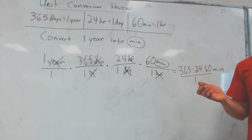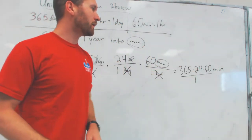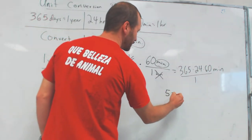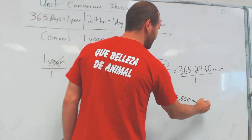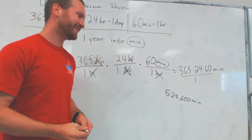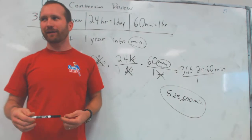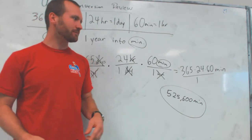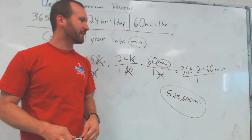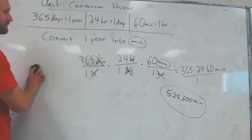Dividing by one doesn't change anything. Someone with a calculator — I think I can do this in my head: I think it's 525,600 minutes. Which is the song! I'm on videotape, I'm not going to sing it. 525,600 minutes.